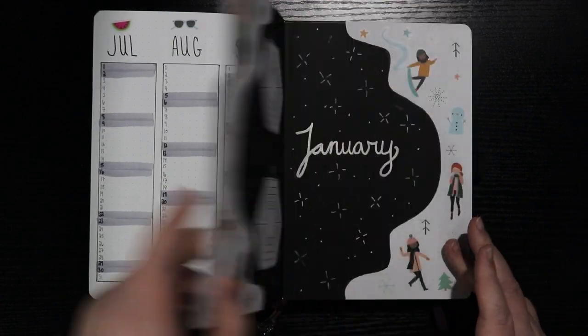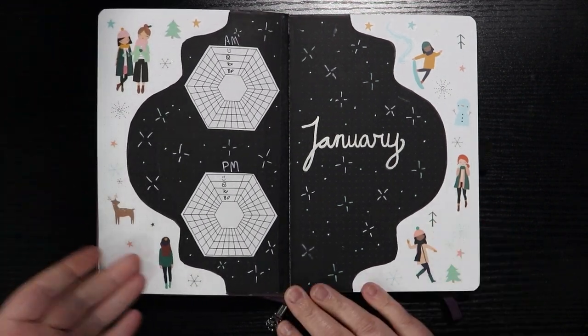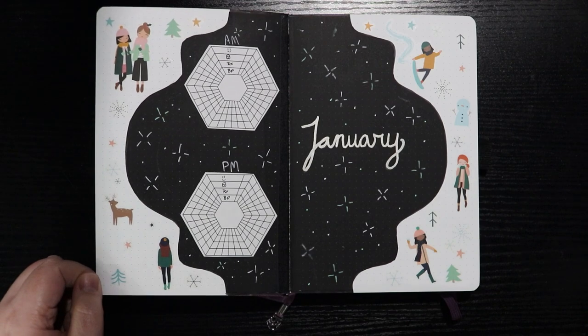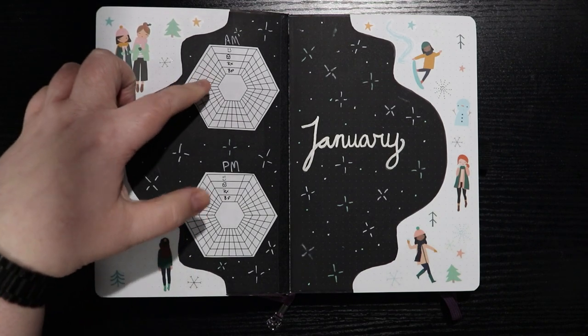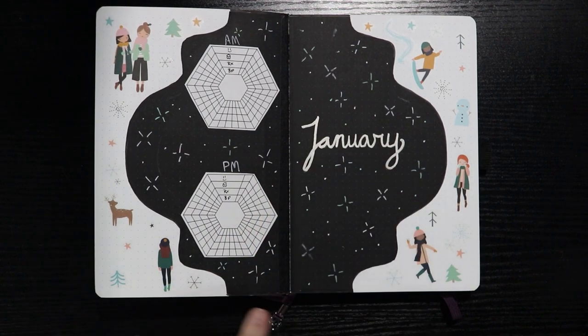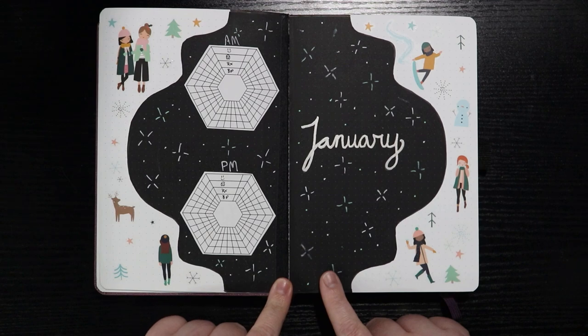So then we get to my January page. These little people, those are stickers from Happy Planner. I obviously did not draw those. I have a AM and PM habit tracker. And my January, I used some blackout pages from my Neapolitan notebook.